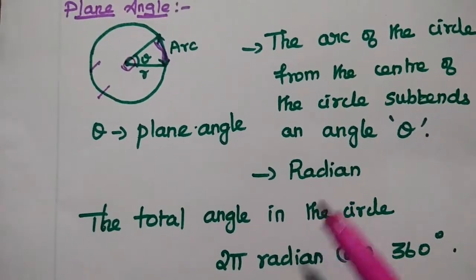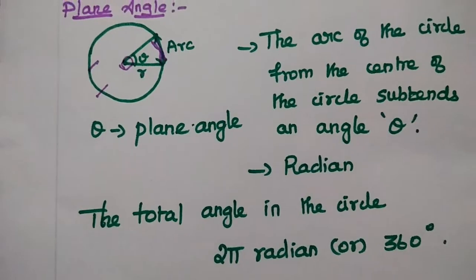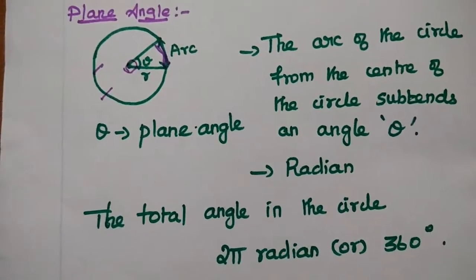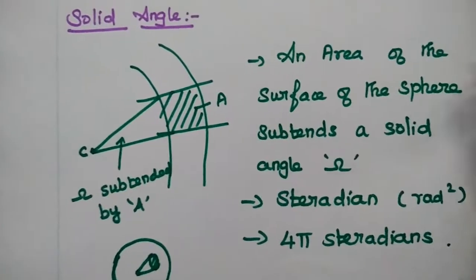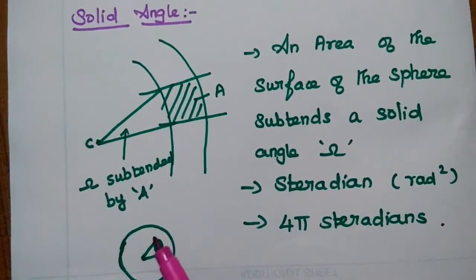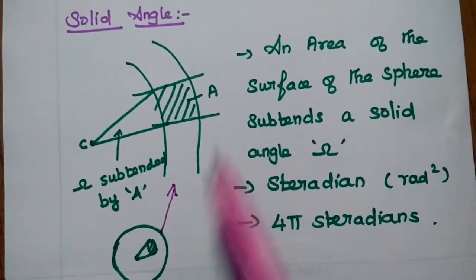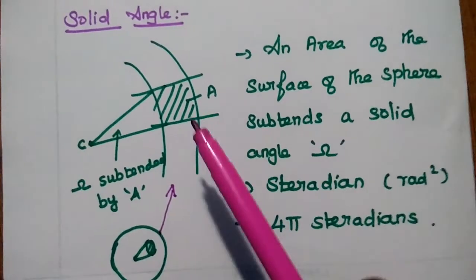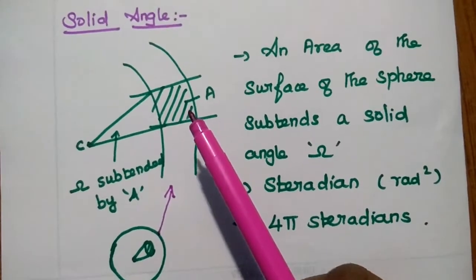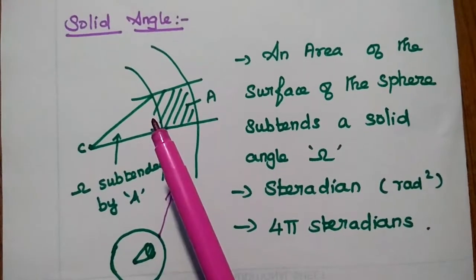But in case of antenna, we are going to radiate the signal in free space. Free space means we are going to consider spherical coordinates. In that case, we are going to consider the angle as solid angle. Solid angle means we are going to consider a sphere. In this sphere, there is a small area. So this area is drawn as an enlarged one. An area of the surface of the sphere creates a solid angle with respect to the center of the sphere. This is called solid angle.